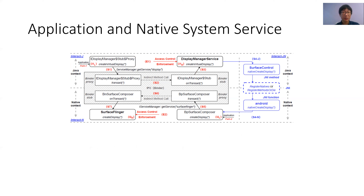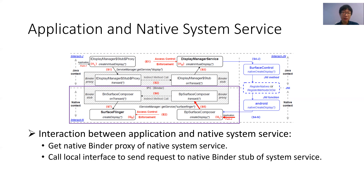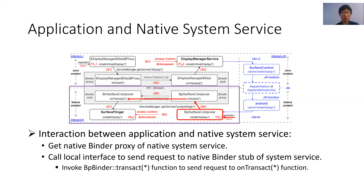To interact with native system services, such as SurfaceFlinger service in this example, applications use a native binder proxy to send a request to the native binder stub, and this process also consists of three steps. First, Android applications obtain the native binder proxy. Second, applications invoke the local interface to send the request to the native binder stub. In this example, the local interface createDisplay defined in the binder proxy class BpSurfaceComposer is invoked, which internally calls the function transact to send a request to function onTransact of the binder stub class BnSurfaceComposer.